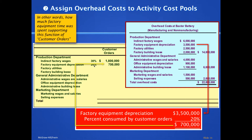Factory equipment depreciation was 3.5 million dollars. We ask what percentage of that depreciation is associated with customer orders — how much equipment time supported customer orders — and it was determined to be about 20%. These percentages are given to us, though in practice whole consulting companies do time and motion studies to determine them. So 20% of 3.5 million goes to the customer orders bucket.